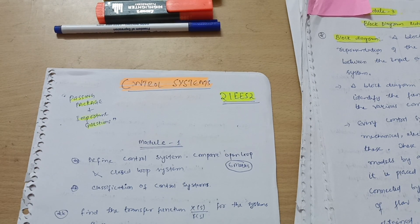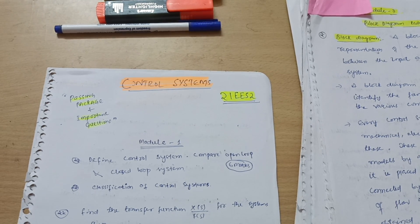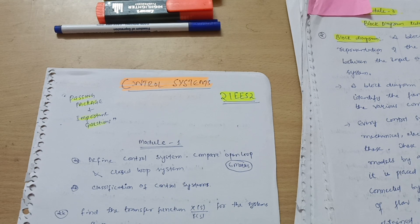Hello, my dear friends, welcome back to my channel. This is the passing package video for Control Systems. The subject code is 21EE52, this is for Electrical and Electronics branch, and the Control Systems subject is also applicable for EC students.